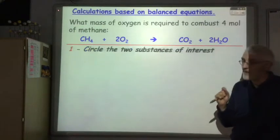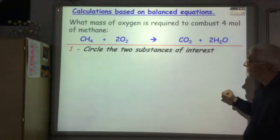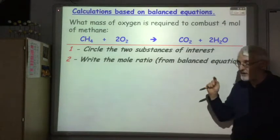It's the five-step method. Remember, firstly we circle the two substances of interest. Secondly, we write the mole ratio based on the balanced equation.